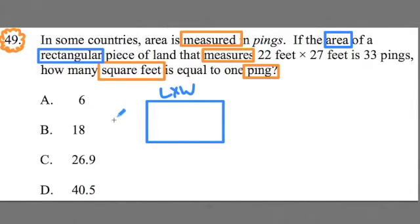And this rectangular piece of land has dimensions of 22 by 27. So why don't you take a moment and find the area of this piece of land. Do that real quick. What's 27 times 22? Sort of work out that calculation.